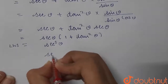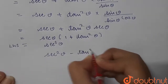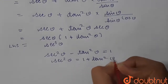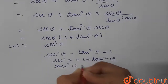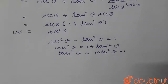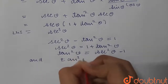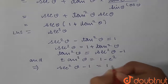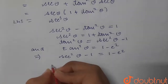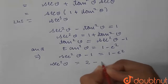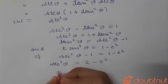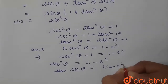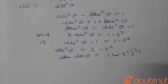Now we know that sec squared theta minus tan squared theta is equal to 1, so sec squared theta equals 1 plus tan squared theta, and tan squared theta equals sec squared theta minus 1. We are given that tan squared theta is equal to 1 minus e squared. So this implies sec squared theta minus 1 equals 1 minus e squared, which means sec squared theta equals 2 minus e squared. Taking the square root, sec theta equals 2 minus e squared to the power 1 by 2.